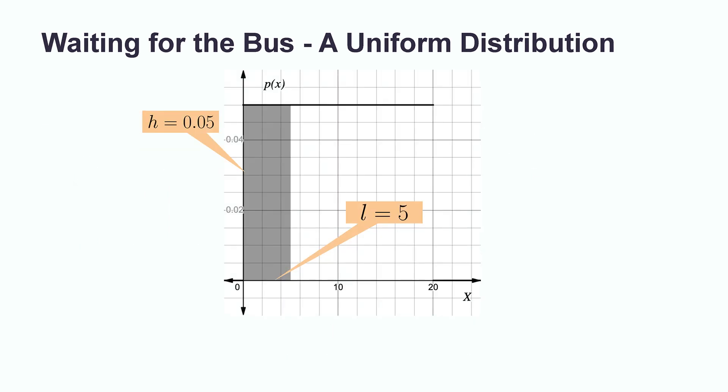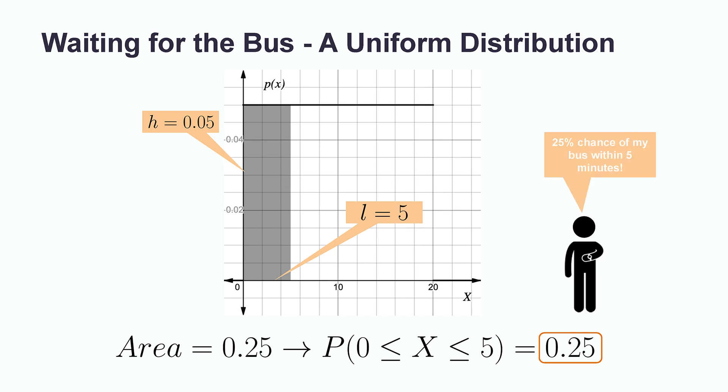Consulting our probability density function, this section of the PDF stretches from 0 to 5 for a length of 5 with the same height of 0.05. Now, the smaller shaded area is equal to the height times the length. In our case, this is equal to 0.05 times 5, giving us an area of 0.25. 0.25 corresponds to the probability of waiting between 0 and 5 minutes. That is, we have a 25% chance to wait less than 5 minutes.